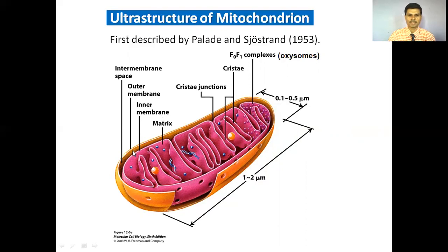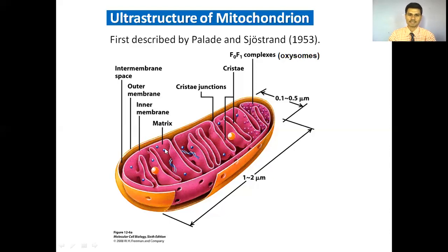The space between the two membranes is called as intermembrane space. The inner membranes show peg-like or finger-like infoldings. These infoldings are called as cristae. On the cristae there are F0-F1 complexes, also called as oxysomes, F1 particles, or elementary particles — there are four names. The liquid portion inside the mitochondrion is called as matrix; into this matrix the Krebs cycle takes place.